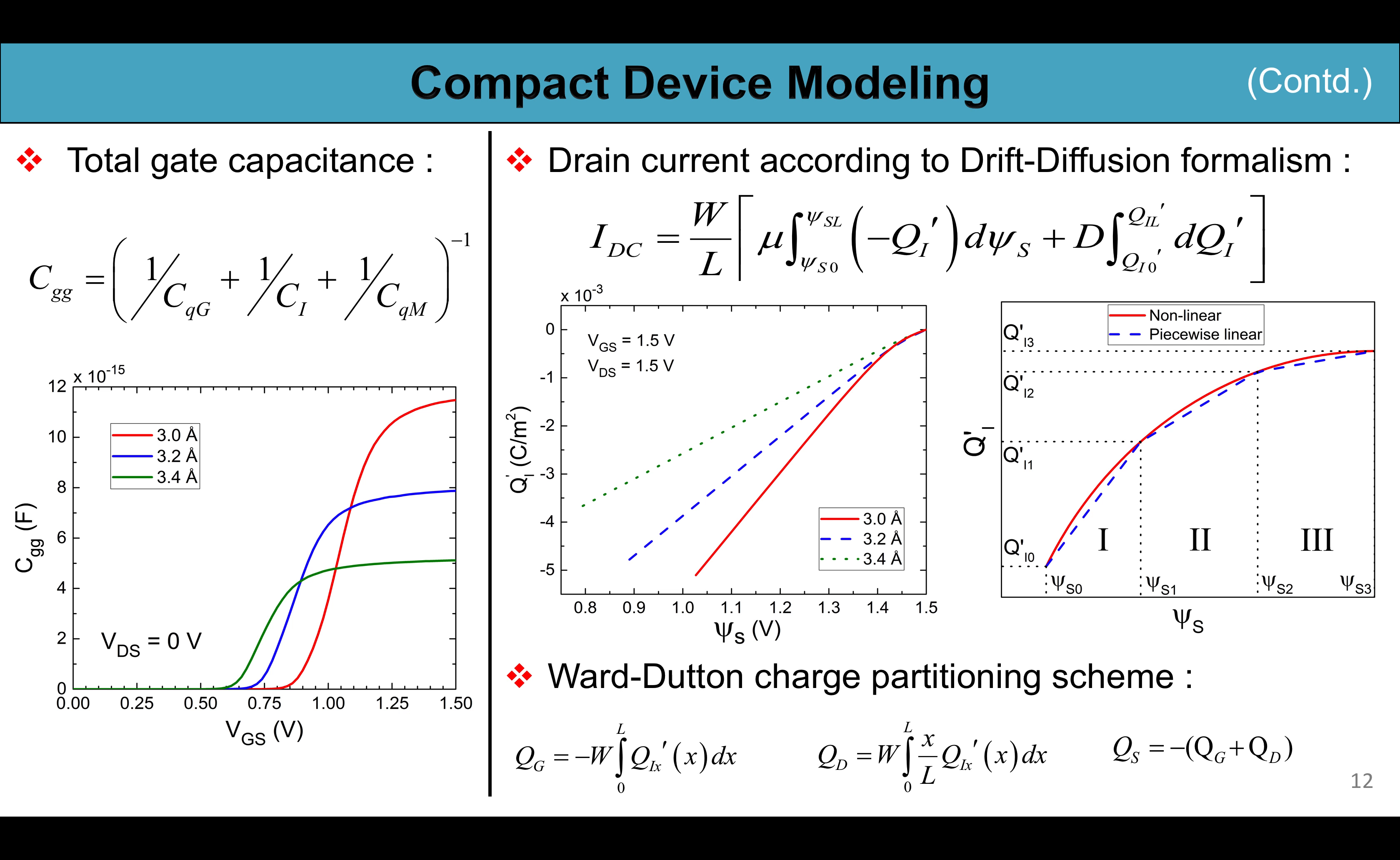However in this case due to the band gap opening of graphene QI' does not necessarily maintain a linear dependence on psi s. Hence we adopt the piecewise charge linearization technique to obtain a closed form analytical expression of current. In this technique the whole channel is basically divided into smaller segments where QI can be approximated as a linear function of psi s without invoking much error. After that, using the expression of drain current, the terminal charges are calculated using Ward-Dutton charge partitioning scheme as shown in the figure.